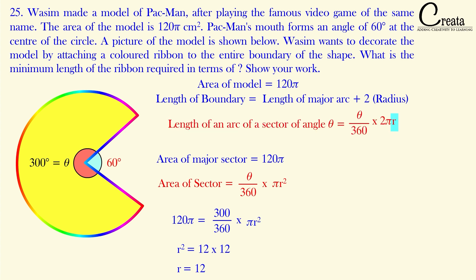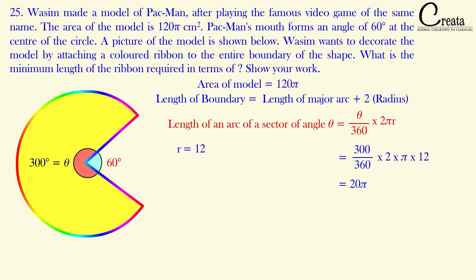Now we can find the length of the major arc. Using the arc length formula and substituting the radius of 12 centimeters and θ = 300°, on solving we get the length of the major arc as 20π centimeters.